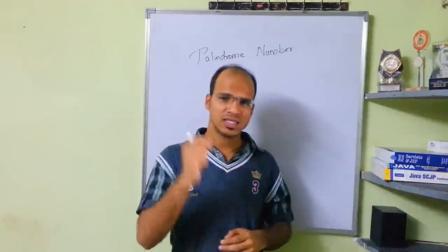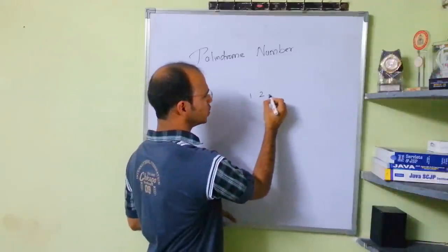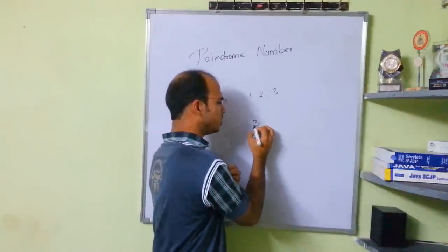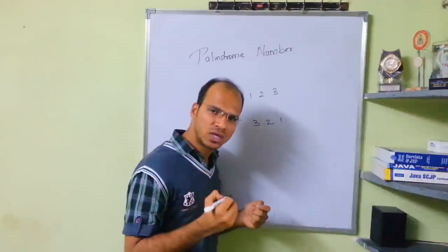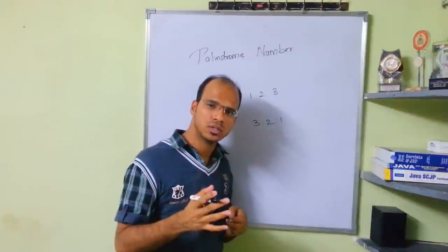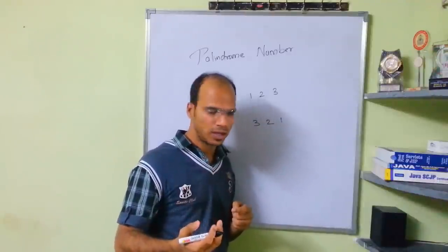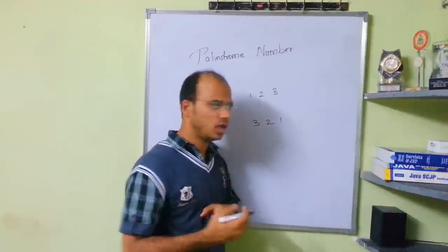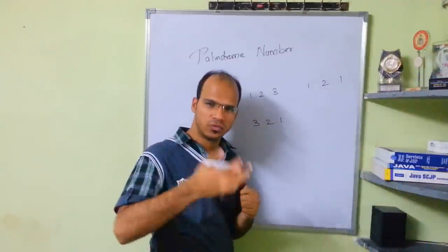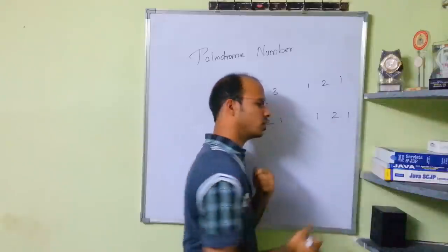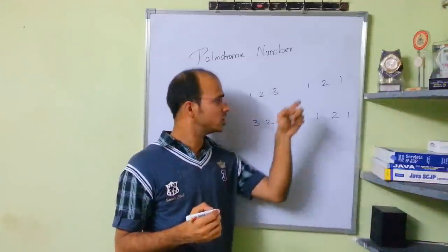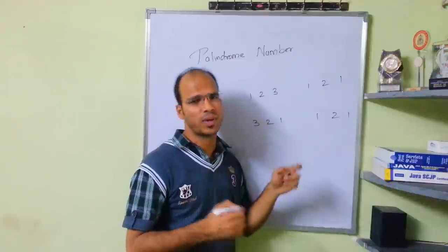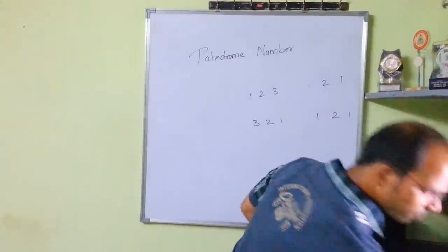Palindrome simply means you reverse a given number and check if the reversed number is the same as the original. For example, 123 reversed is 321 — they are not the same, so 123 is not a palindrome. But 121 reversed is still 121, so 121 is a palindrome. If input equals output, it's a palindrome; if different, it's not.